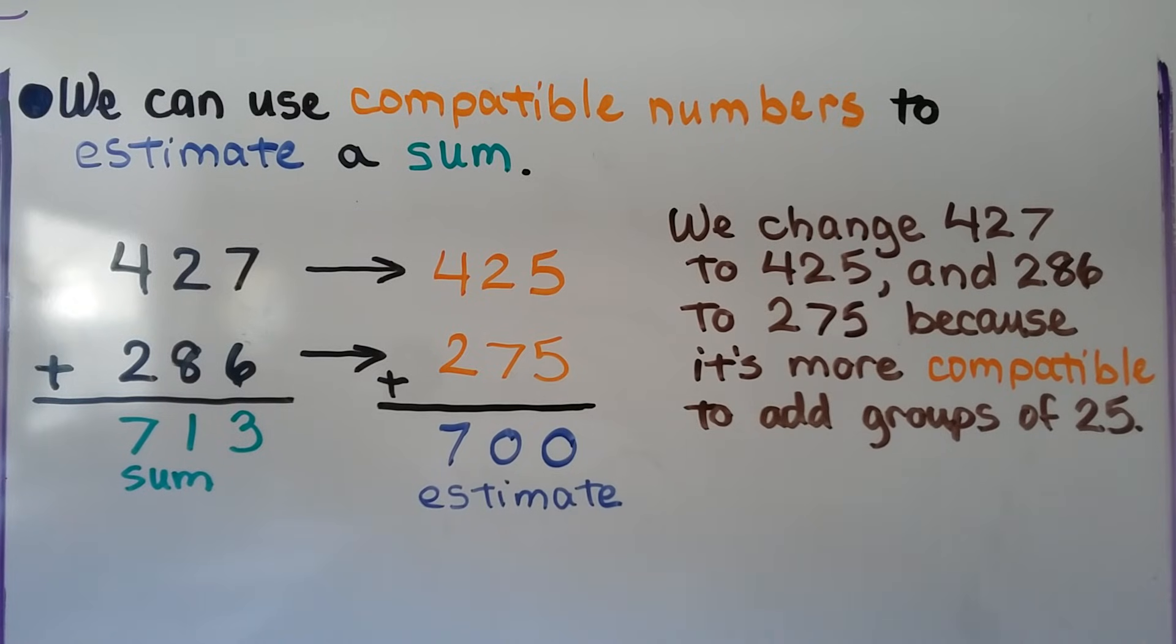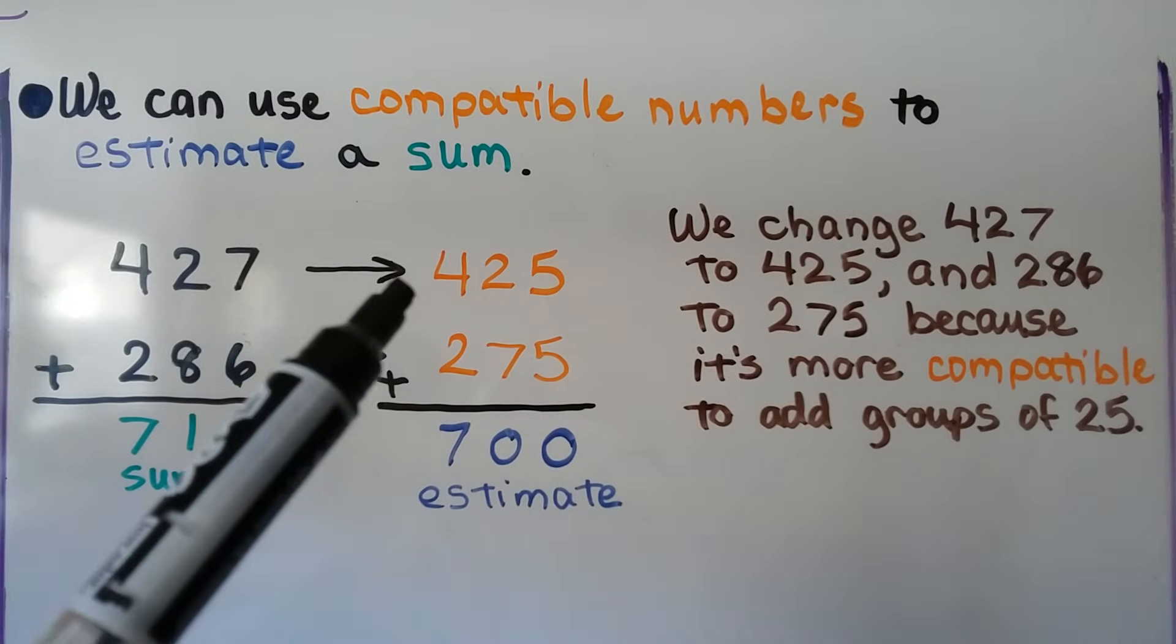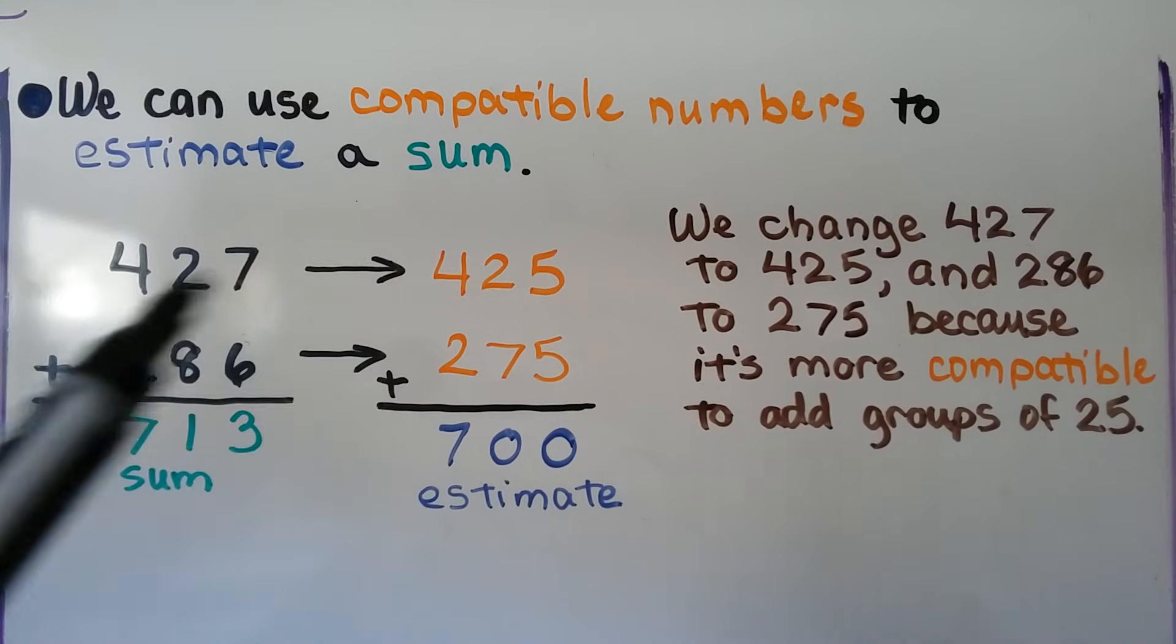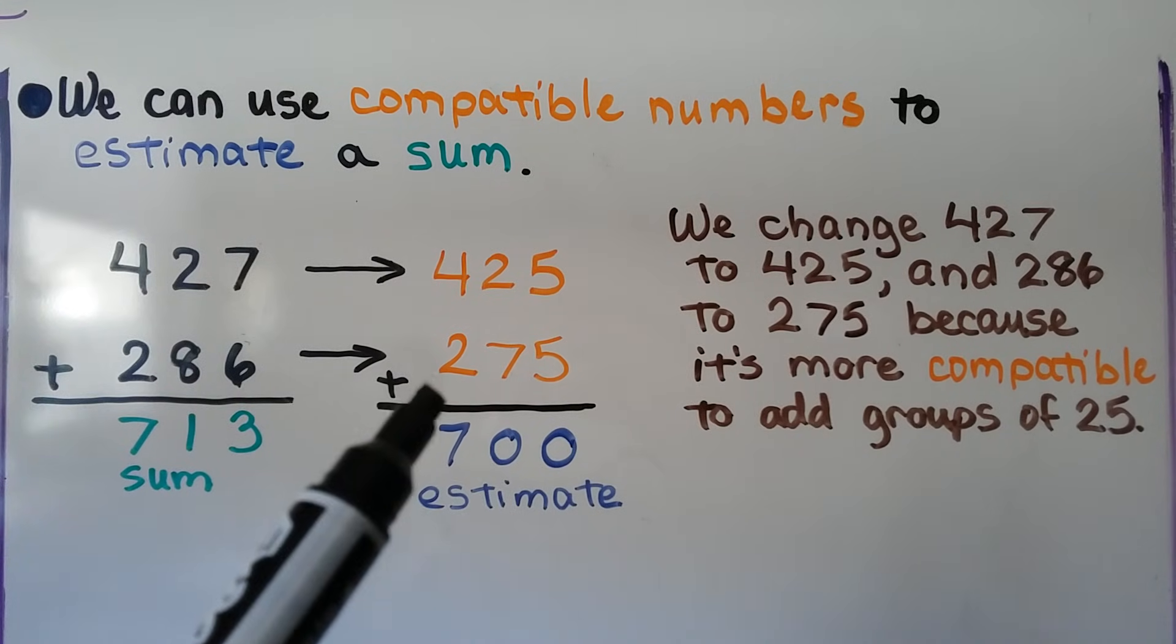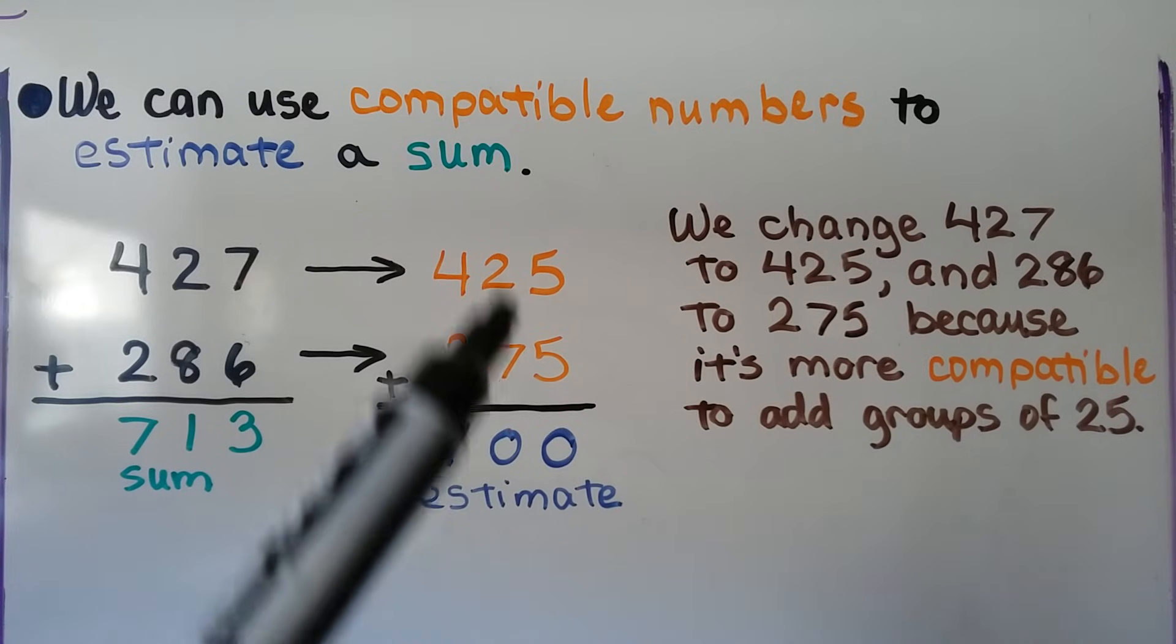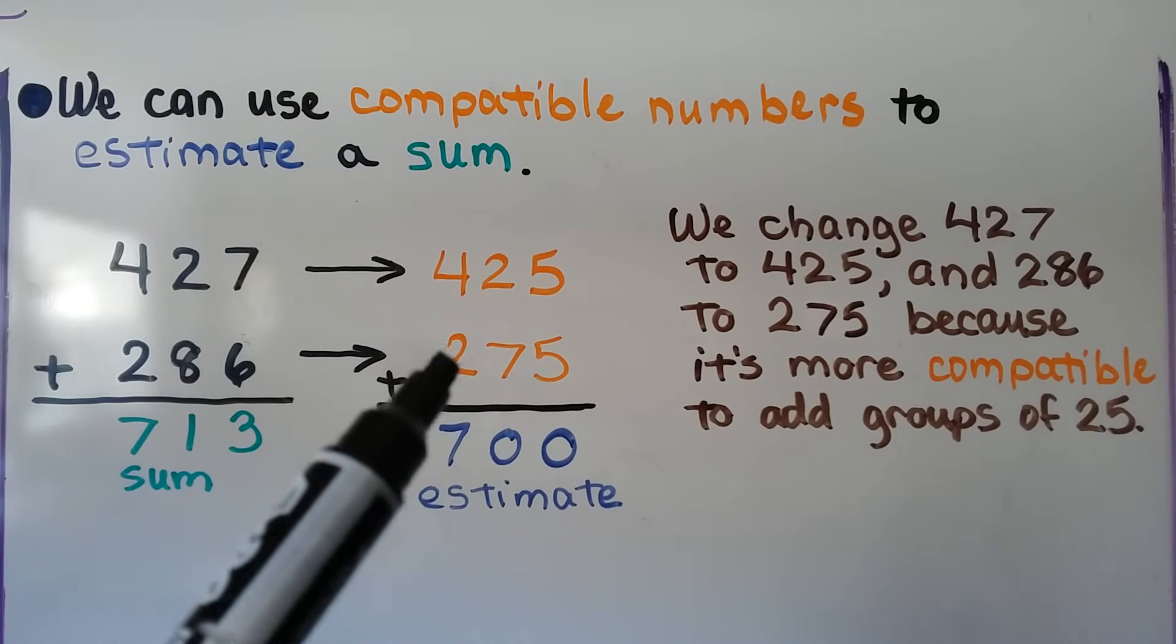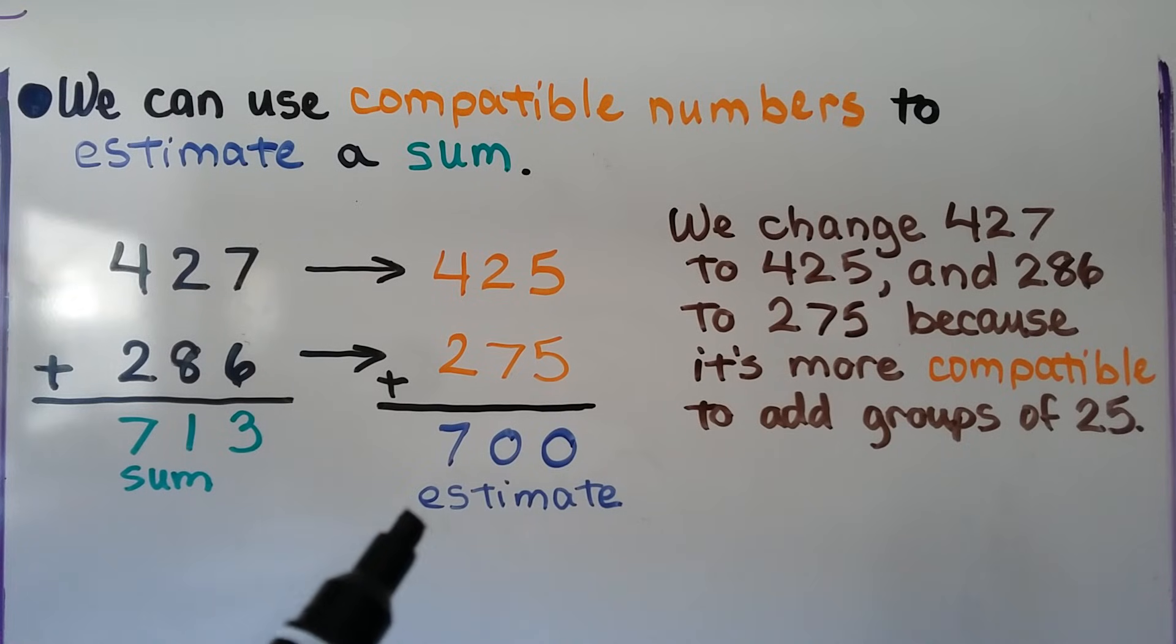So we can use compatible numbers to estimate a sum. We have 427. We can make it 425. We have 286. We can make it 275. So we have a 75, 25 here to make another 100. Then our estimate would be 700.